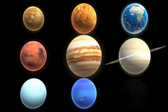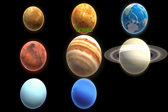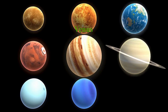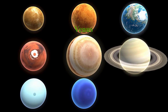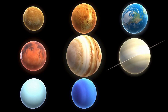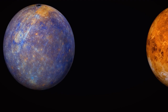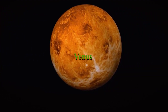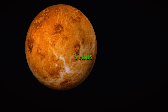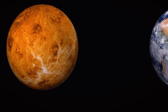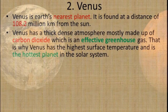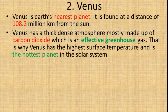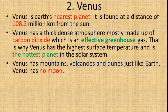That is why Venus has the highest surface temperature and is the hottest planet in the solar system. Venus has mountains, volcanoes, and dunes.